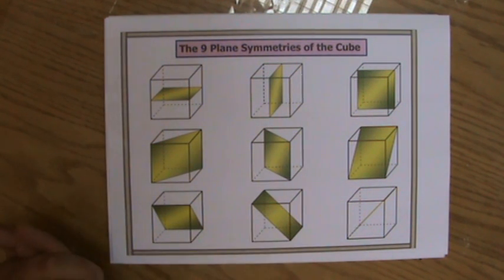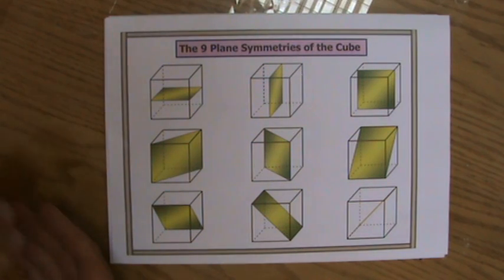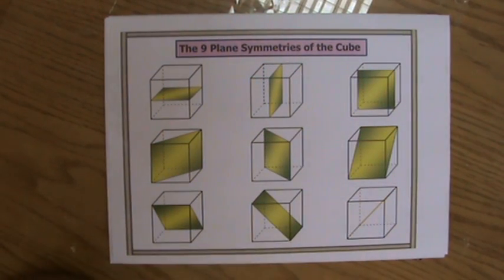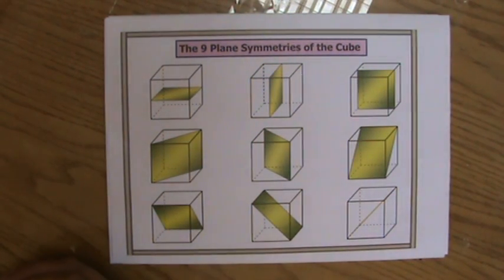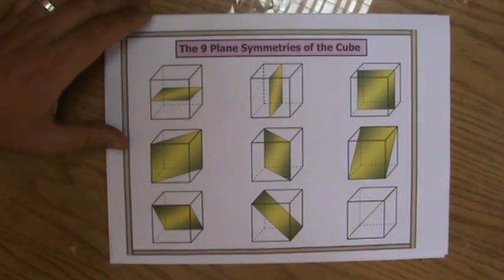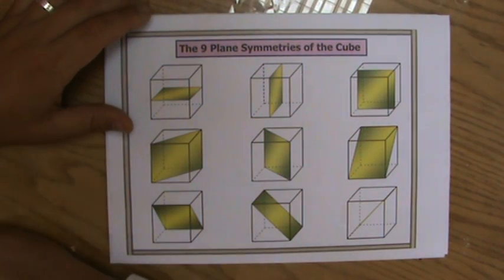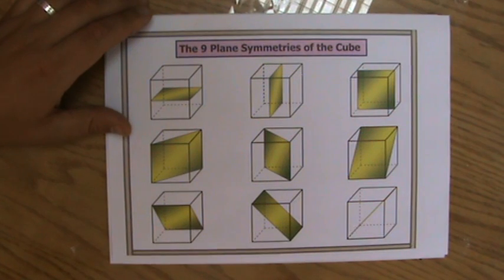Planes of symmetry — we've covered lines of symmetry, and we're going to talk about rotational symmetry now. Check my site, explainingmaths.com, for all the resources you need to understand maths a bit better. I'll see you later — bye-bye.